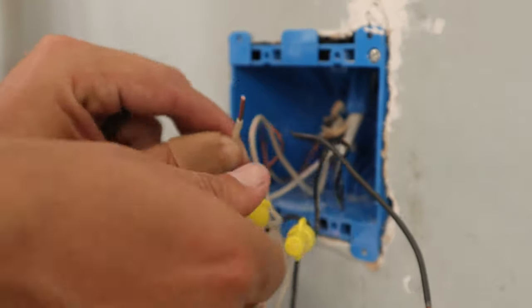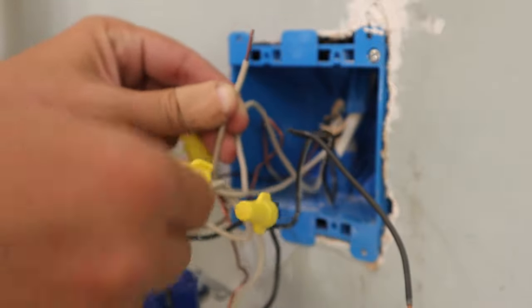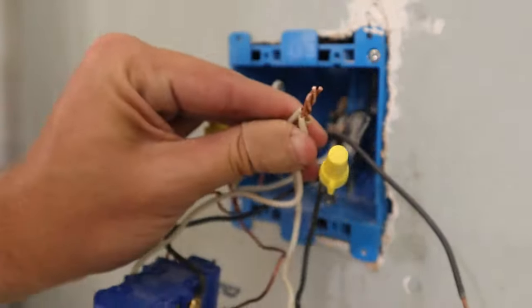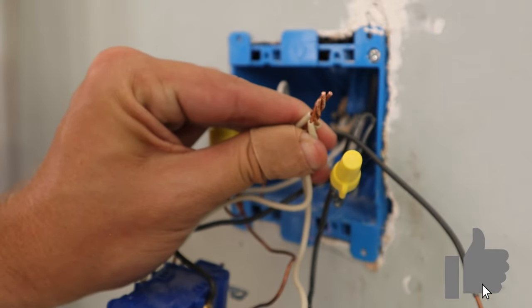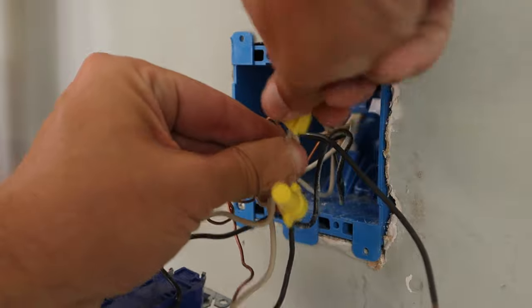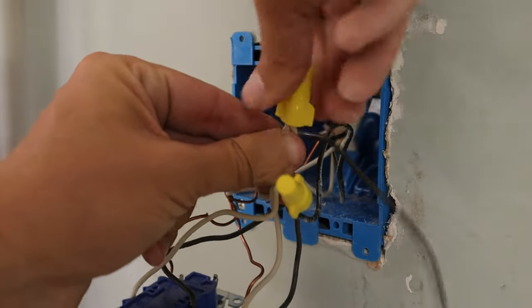Next I'm gonna do the same thing with the neutral wires. I'm gonna remove this wire nut from all of these neutral wires and join it up with the neutral wire coming from the new outlet. Then I'm gonna put the wire nut back on top of all of those neutral wires.